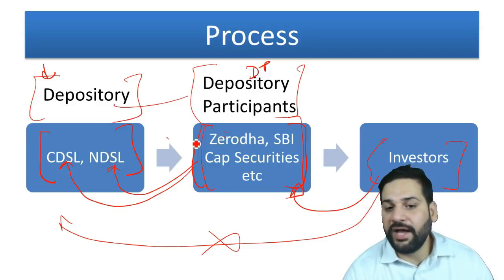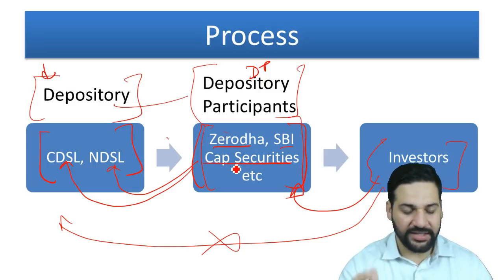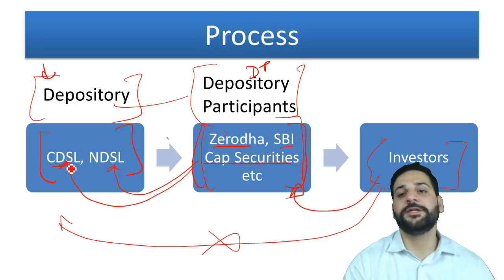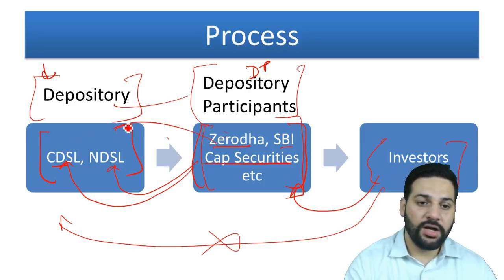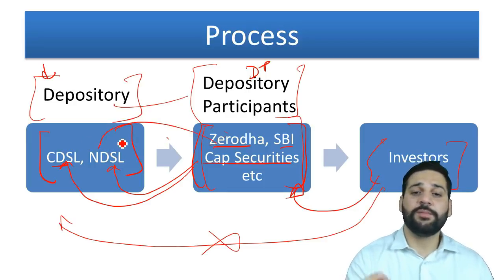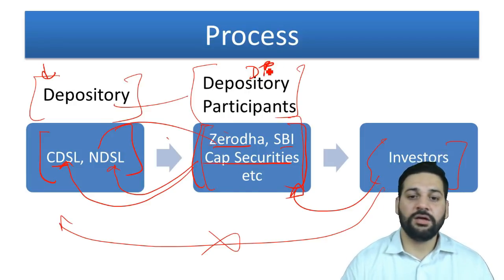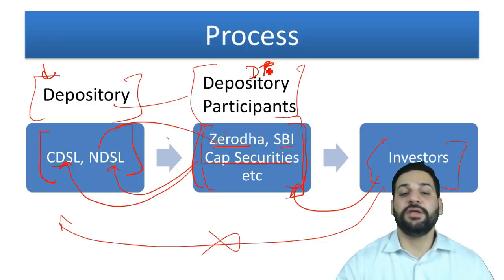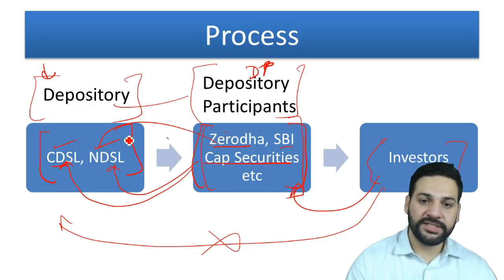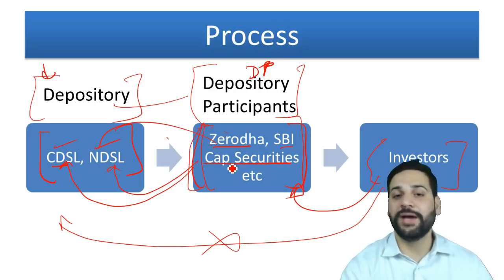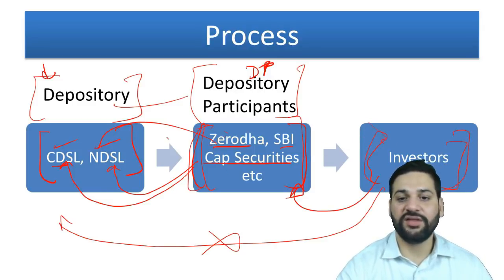For example, I have accounts with Zerodha and SBI Securities, and I think both of them are from CDSL. DP is a short form - that could be a question in the exam. The full form of DP is Depository Participant. CDSL and NSDL are the two depositories, and all the companies with whom you open a Demat account are DPs. You are the investor - that is the simple process.